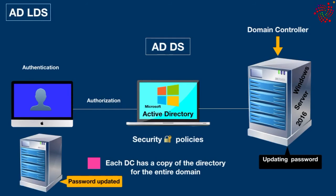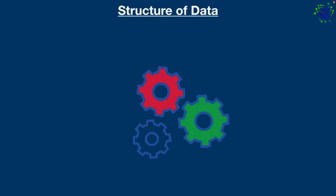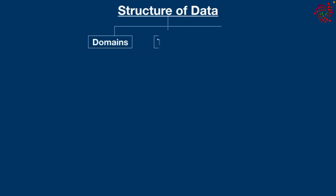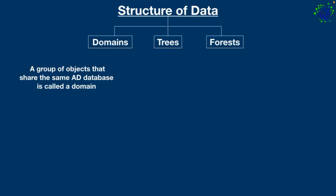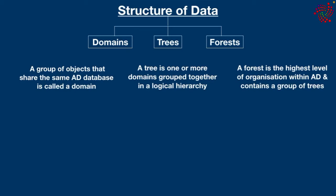Other Active Directory services include Lightweight Directory Services, Federation Services, Rights Management Services, and Certificate Services. Active Directory stores information in a hierarchical structure consisting of domains, trees, and forests. A group of objects that share the same Active Directory database is called a domain. A tree is one or more domains grouped together in a logical hierarchy. A forest is the highest level of organization within Active Directory and contains a group of trees.